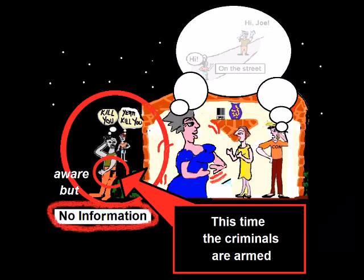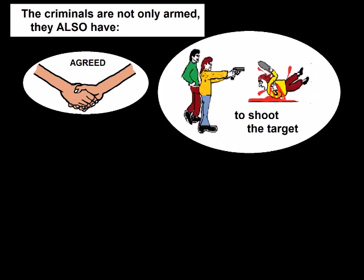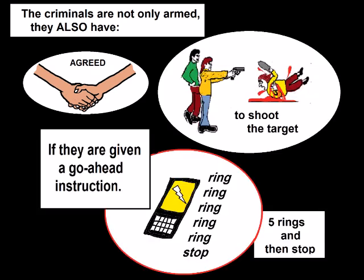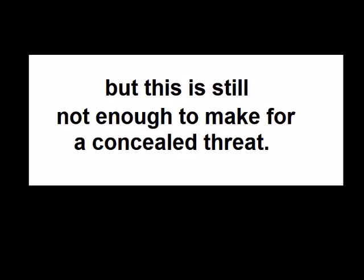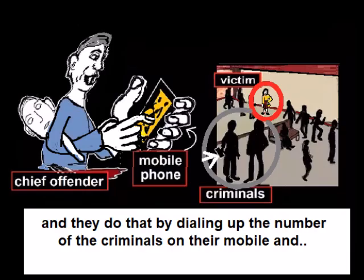This time the criminals are armed, and the criminals are not only armed — they also have agreed to shoot the target if they are given a go-ahead instruction. But this is still not enough to make for a concealed threat. To have a concealed threat, the chief offender having the means ready and waiting must uphold criminal intent.